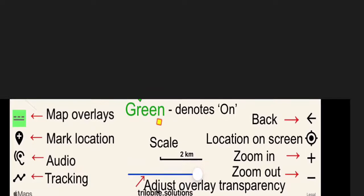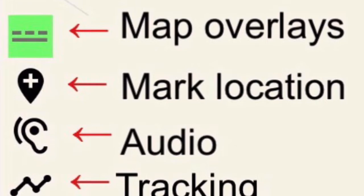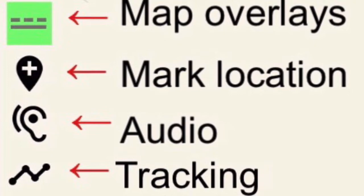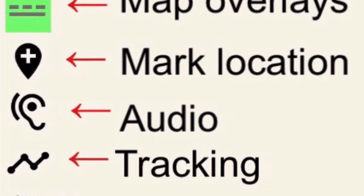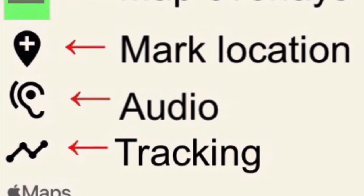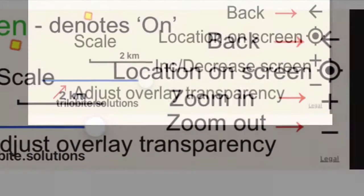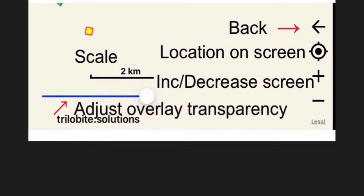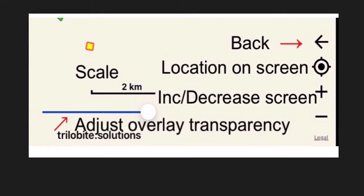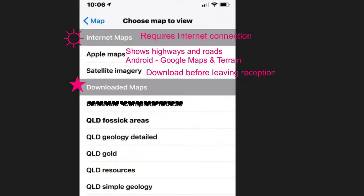Now a quick run through of the features in the legend. The first one is map overlays. The second little plus sign allows you to mark your location on a map. The little ear denotes audio. The little voice tells you where geological features you're passing over. The little end there is for tracking. The scale is shown there, and underneath it the blue line showing the adjusted overlay transparency. Then there's the back arrow that takes you to the last screen you were at, the location on the screen which will show as a blue dot, and the plus and minus for increase and decrease in the screen size.